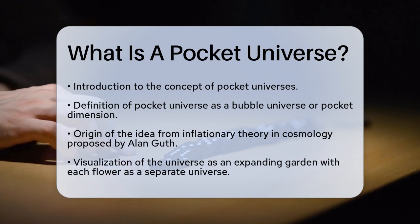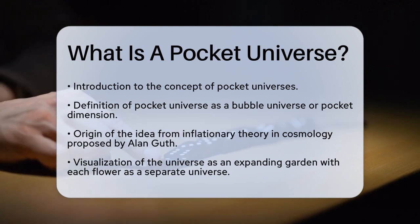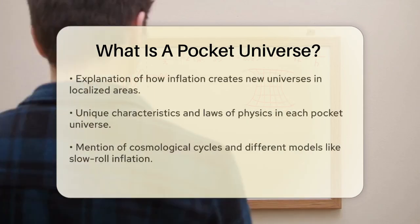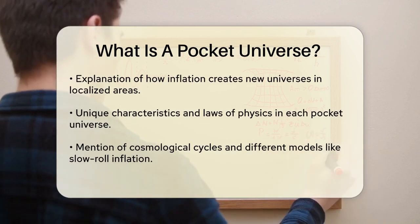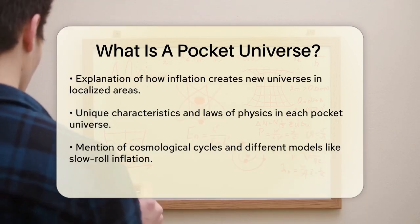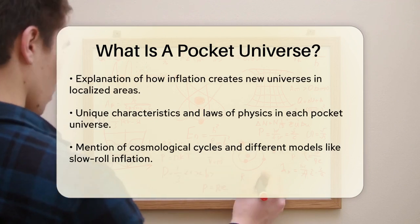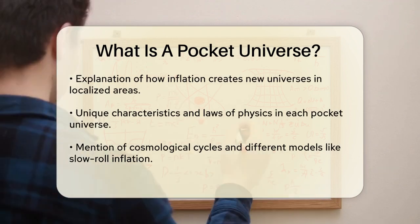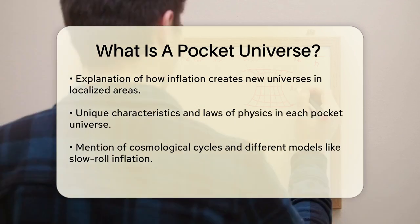Imagine the universe as a vast, ever-expanding garden. In this garden, each flower represents a separate universe. According to Guth's theory, inflation never really stops — it only slows down in localized areas, creating new universes in the process. These universes are like mushrooms sprouting from a vast, expanding network of mycelium.